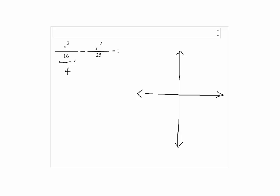First, 16 is 4 squared, so we know that a squared is 4 squared, so the a will be 4. And 25 is 5 squared, so that will be our b squared, so our b equals 5.